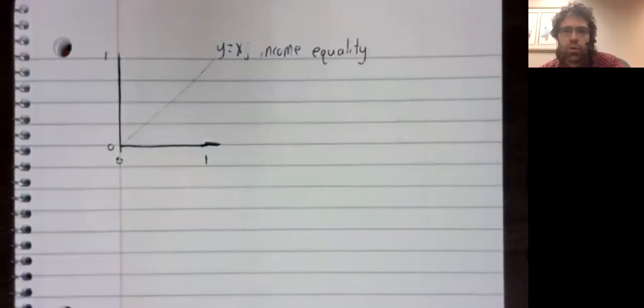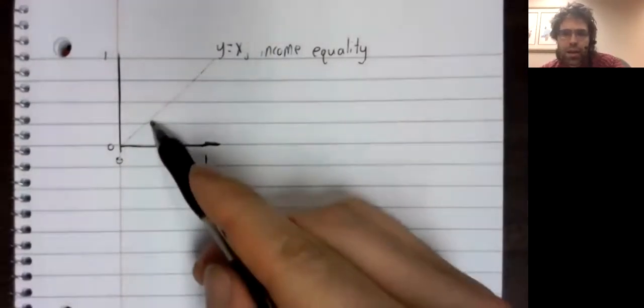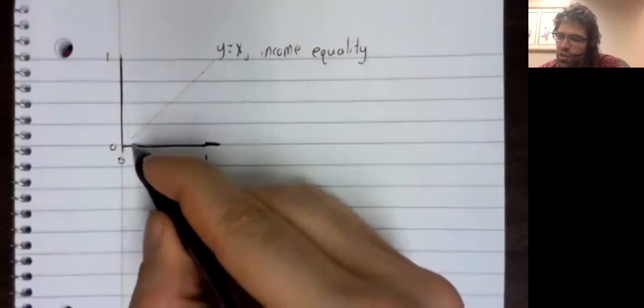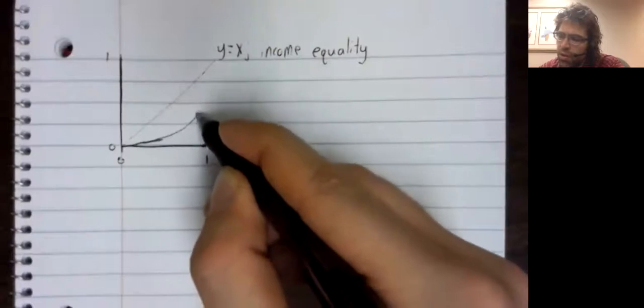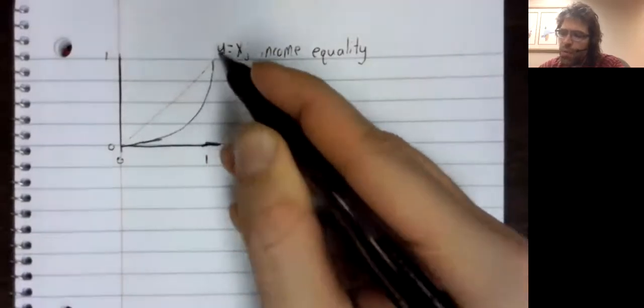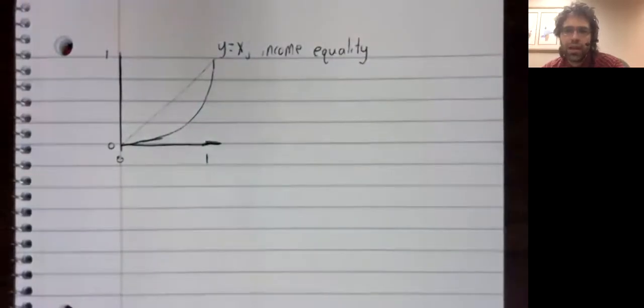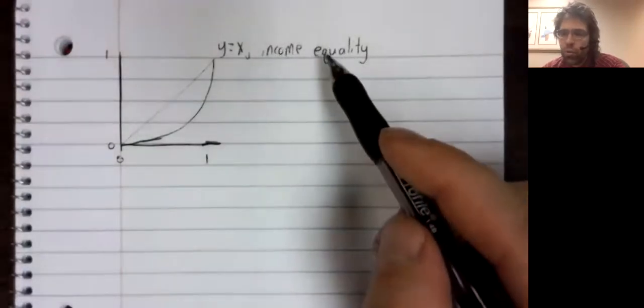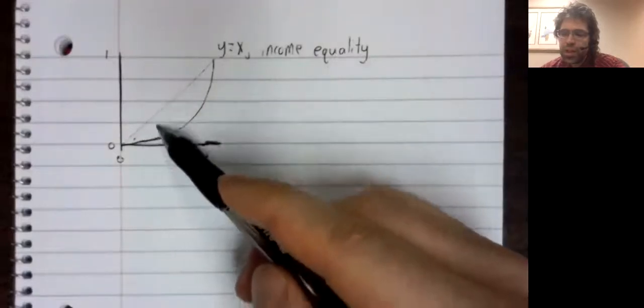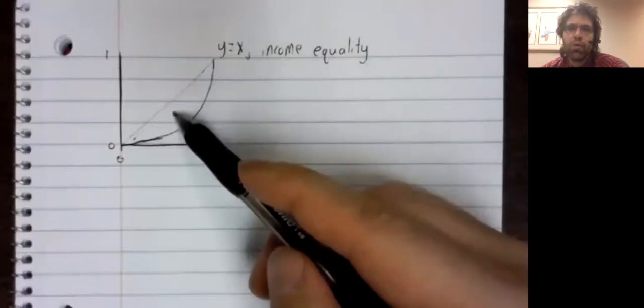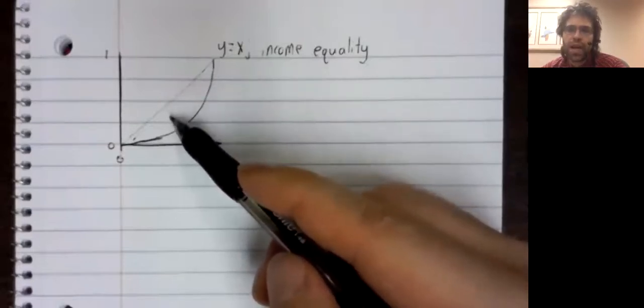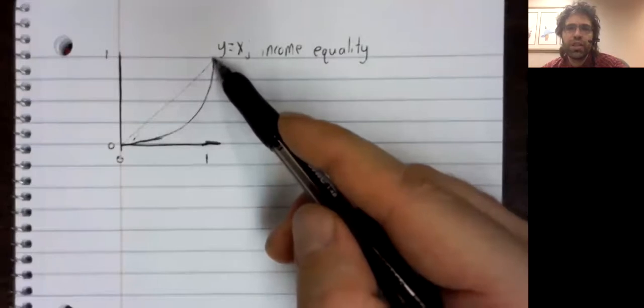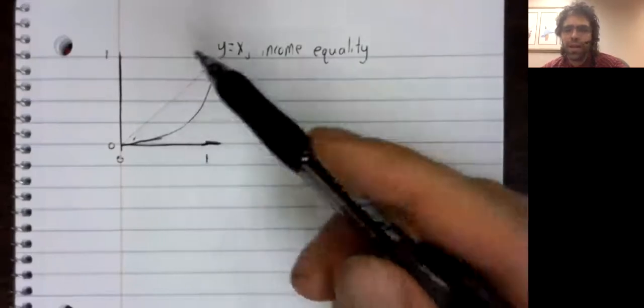And the line y equals x represents income equality. Depending on your personal politics, this is perhaps what you would like to see. And a country's actual Lorenz curve is somewhere below that line. This area is a measurement of how far you are from that goal, how the actual wealth distribution of the country varies from your ideal.